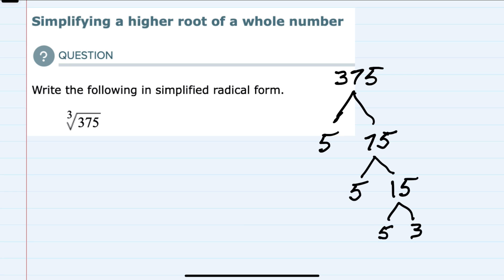So rewriting our cubed root as 5 times 5 times 5 times 3, I can now see how since this is a cubed root, I can take numbers from underneath the radical and move them outside in groups of 3, and I do have 3 5s underneath the radical.